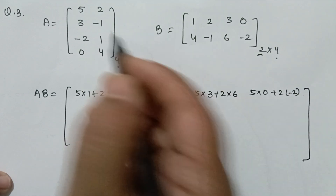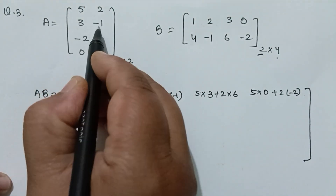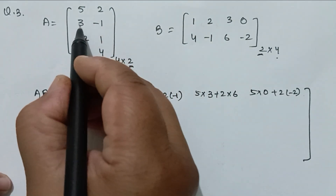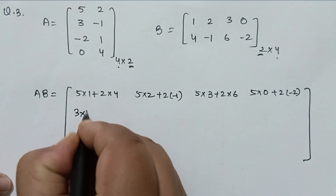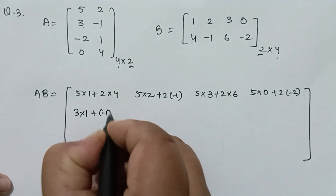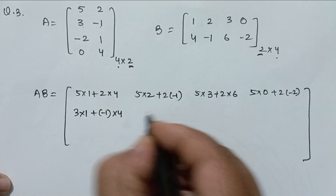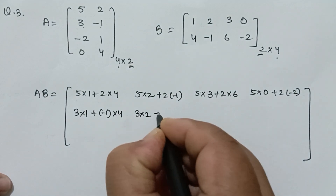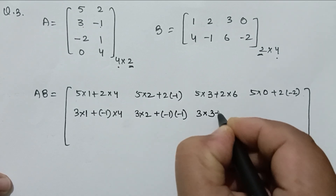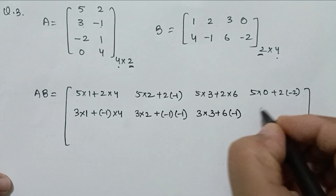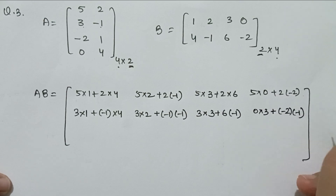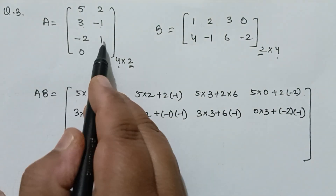For the second row of AB, we use the second row of matrix A with all columns of B. Second row, first column: 3×1 plus (−1)×4. Second row, second column: 3×2 plus (−1)×(−1). Second row, third column: 3×3 plus 6×(−1). Second row, fourth column: 0×3 plus (−2)×(−1). This completes the second row.